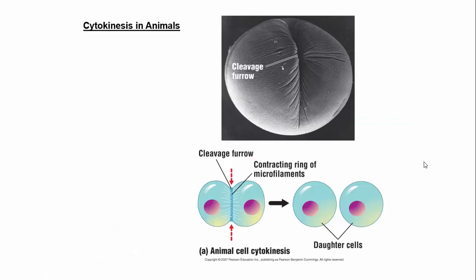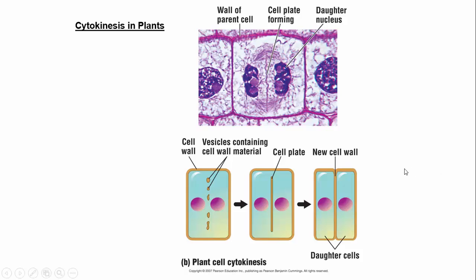Cytokinesis happens very differently in animal cells versus plant cells. In animal cells, it's a pinching in — an invagination of the membrane called a cleavage furrow. This is a contractile ring of microfilaments, specifically actin, that pinches the membrane until you get two daughter cells. This works because animal cells have no cell wall. In plant cells, you can't pinch the rigid cell wall inward. Instead, a cell plate forms — essentially the same as a cell wall. Once it fully separates the cells, it becomes the new cell wall.